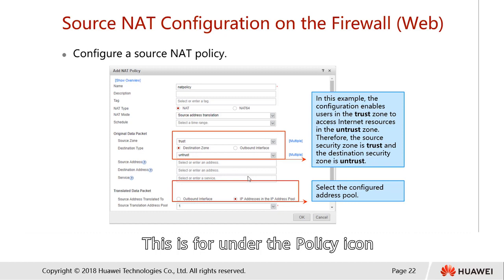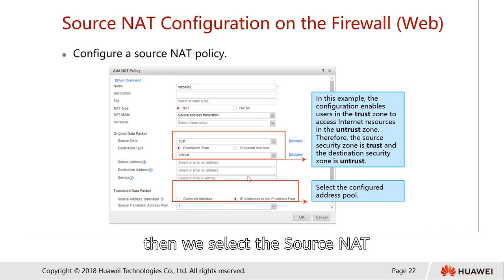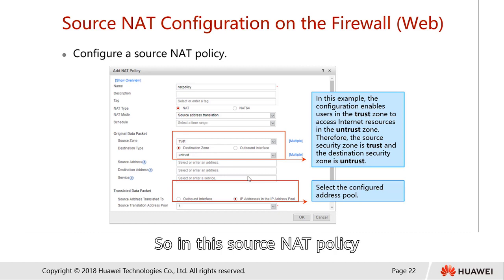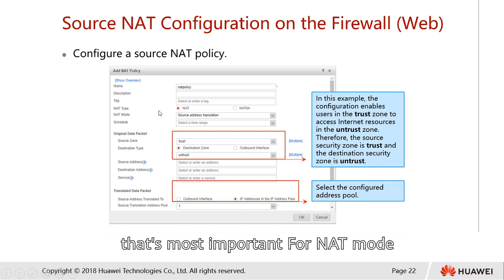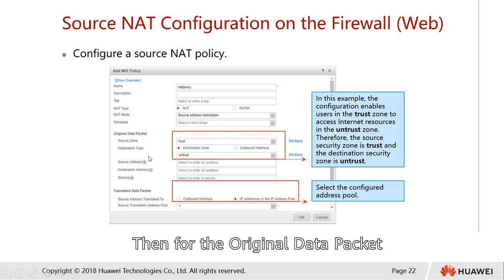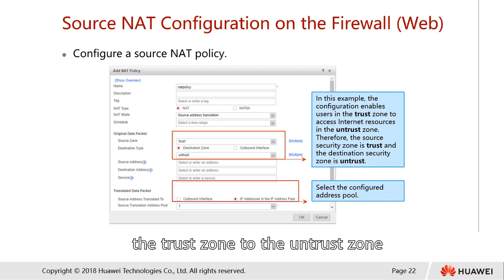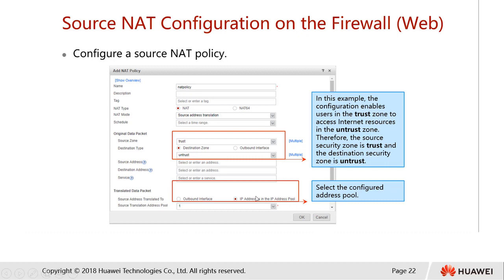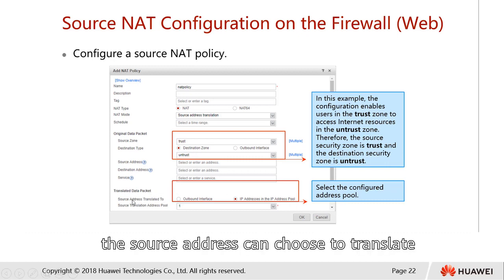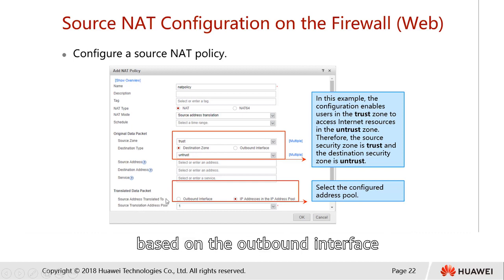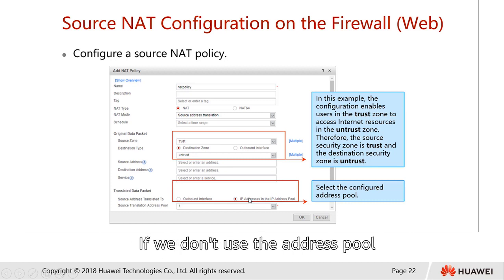Under the policy icons in the web interface, we go into the NAT policy and select source NAT. Under source NAT, we click Add to create a new source NAT policy. First, we specify the name of the policy, then the type of NAT — most importantly the NAT mode — we choose source NAT. For the original data packet, we refer to parameters such as trust zone to untrust zone: source zone is trust, destination zone is untrust. For the translated data packet, the source address can be translated to the address pool based on the outbound interface (Easy IP) or addresses inside the pool. If using address pool mode, we choose that option.